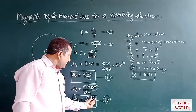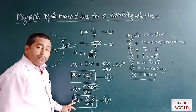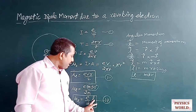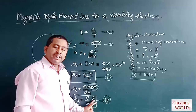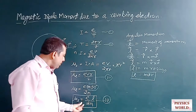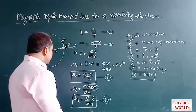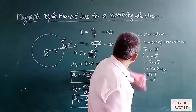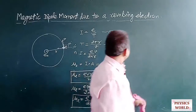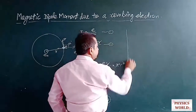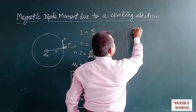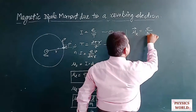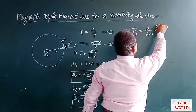Since the magnetic dipole moment and angular momentum are both vector quantities, we can express this in vector form: μL vector = (E / 2m) × L vector.